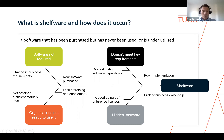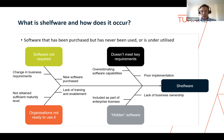Looking at the contributing factor in the bottom left — 'organizations not being ready to use it.' Implementing technology alone isn't going to increase your maturity. There are prerequisite foundational steps that need to be addressed first regarding people and processes. If these aren't addressed beforehand, the enabling technology won't have anything to enable. End user enablement — specifically training — is also something that can make or break whether an organization is ready to use the solution.